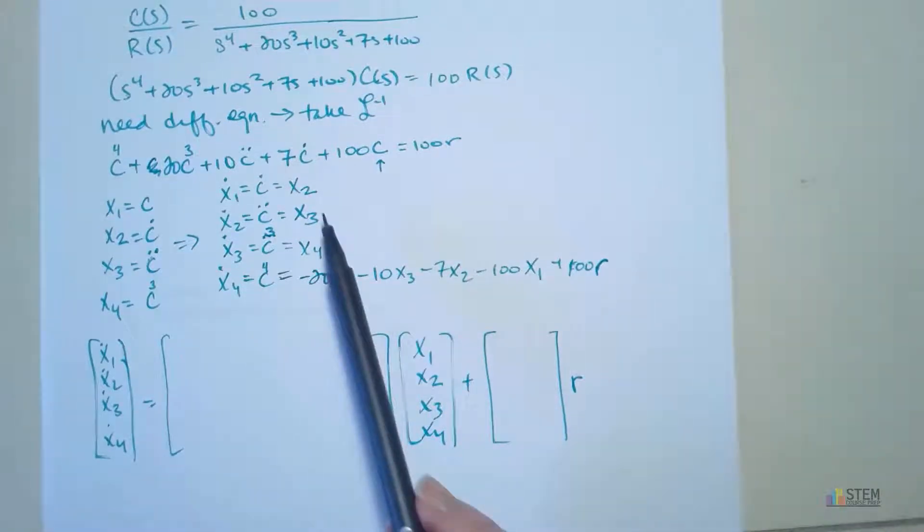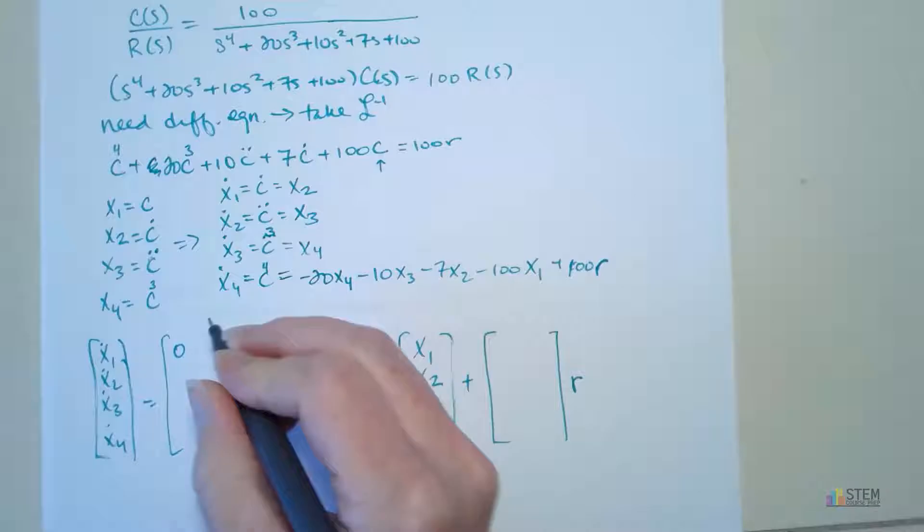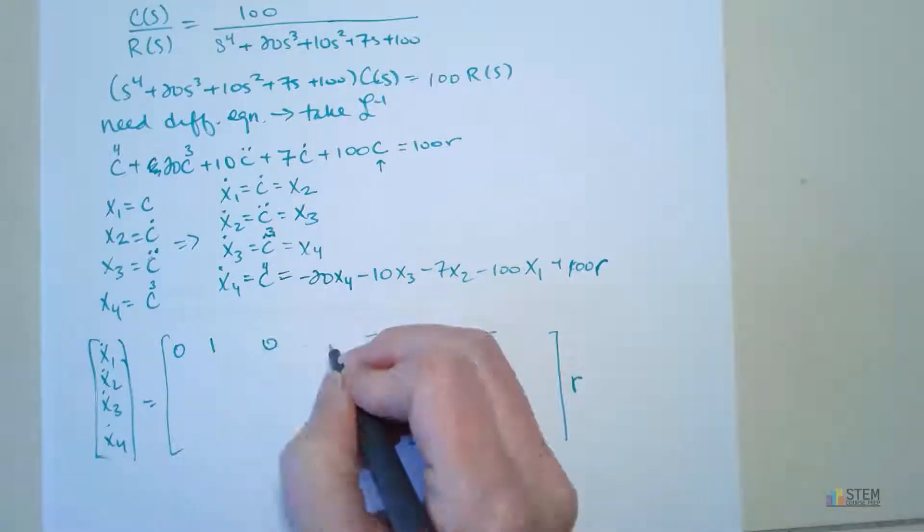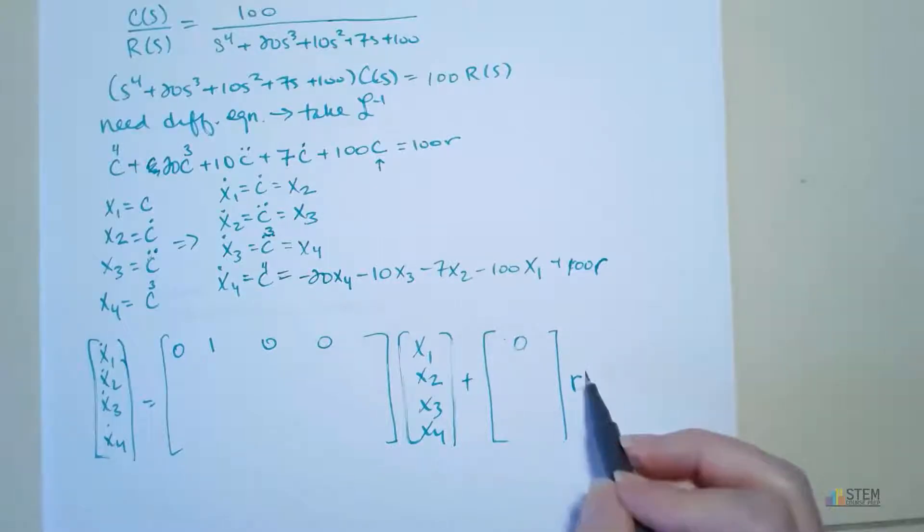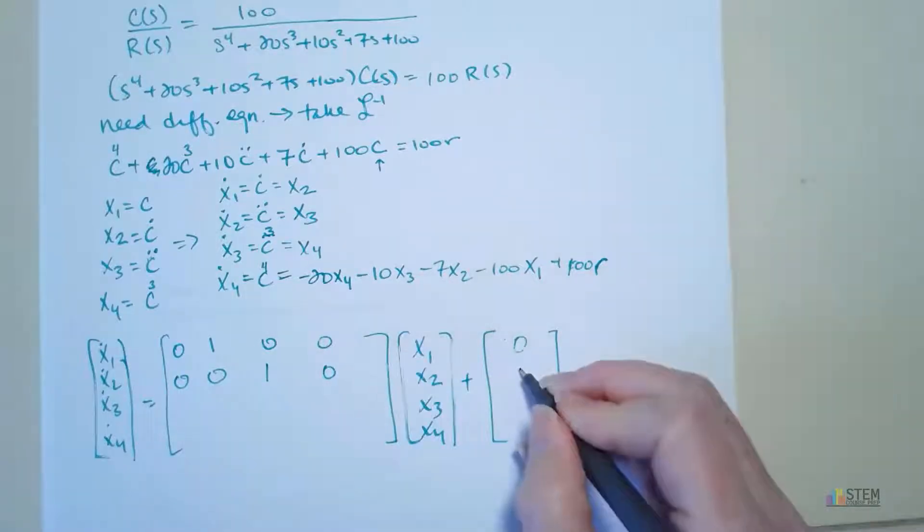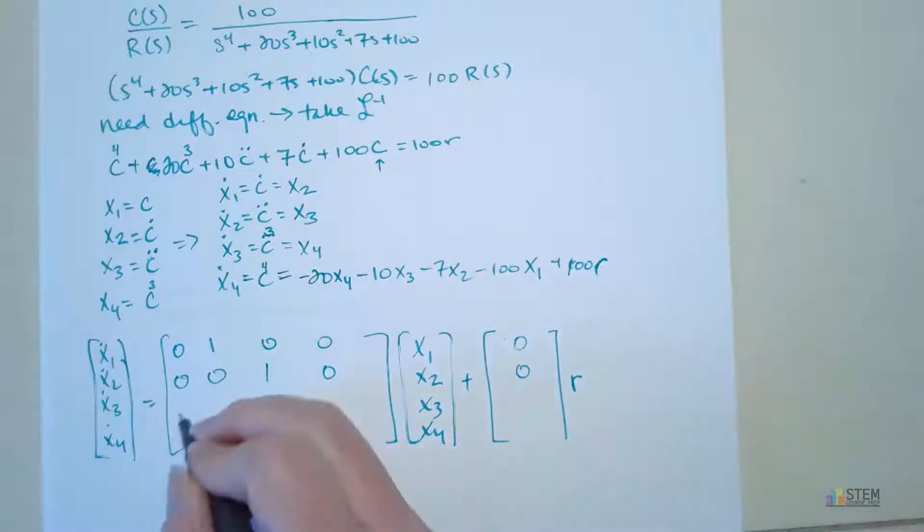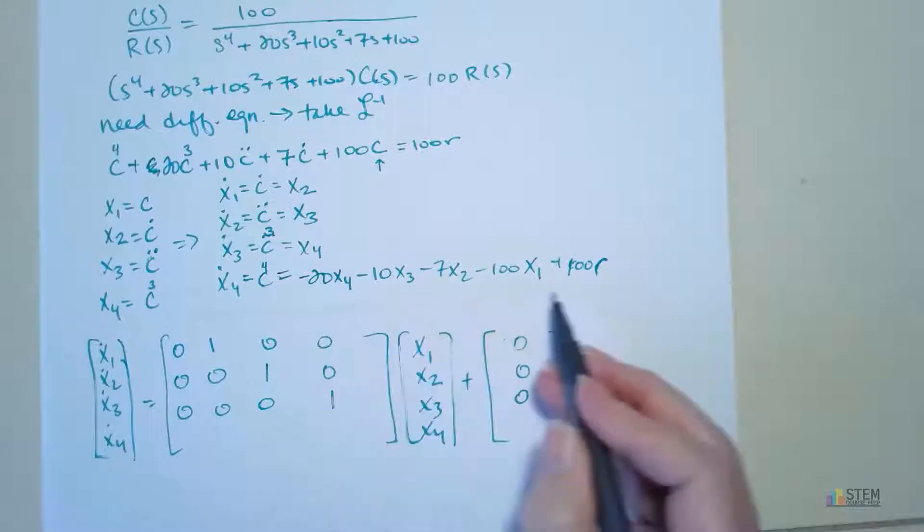So remember, you're going to have that diagonal of 1s until we get to that last row. So notice we're starting out at x2, though, so you're going to have a 0 here first. And then 1, 0, 0. This over here is going to be 0 because there is no r component in that equation. Next, we got x3, so that's 0, 0, 1, 0. And over here is 0. Third row, three 0s, then the 1, and a 0 in the B matrix.